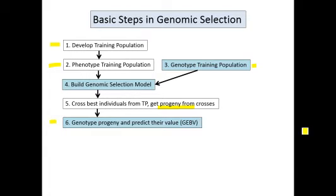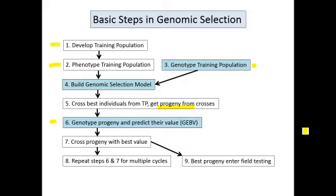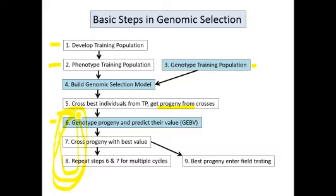In step six, you genotype those progeny, and using the model built in step four, you predict their value based solely on their genotype data — you obtain their GEBVs. From that, you select the best of those progeny, cross them, and in step eight, you simply go back and repeat steps six and seven. This completes a cycle of genomic selection. Your selection is based solely on estimated breeding values and the genotype of individuals, and you can move through steps six, seven, and eight very quickly.